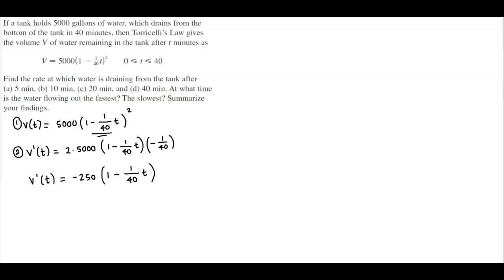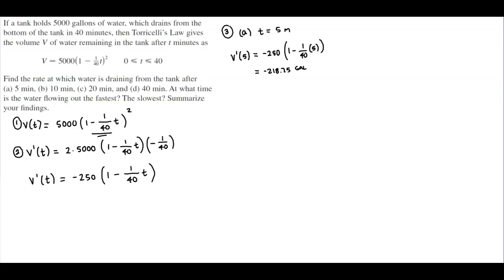Now that we've determined the derivative, we look at the rate at which water is draining after the following times. For part A, when T is equal to 5 minutes, we plug that into our function: V prime of 5 is equal to negative 250 times (1 minus 1/40 times 5), which equals negative 218.75 gallons per minute.